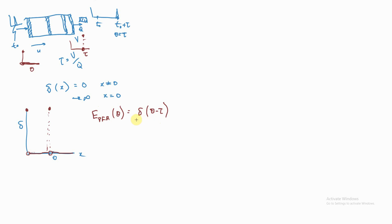In a way it's a very simple distribution: nothing happens until τ, then everything shoots out at τ, and then after τ there's nothing. Nothing older than τ can pass through the system, and nothing can leave earlier than τ. That's how precise the PFR is. Now let's think about the internal RTD I(θ) for this PFR — take a second to pause and sketch what you think the age distribution looks like inside the PFR.